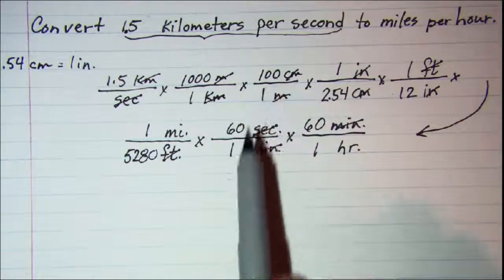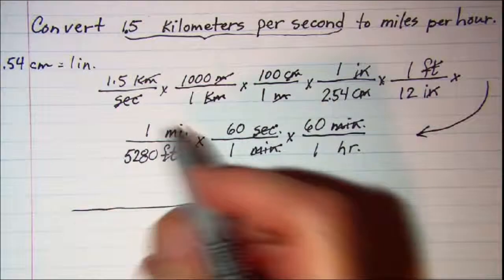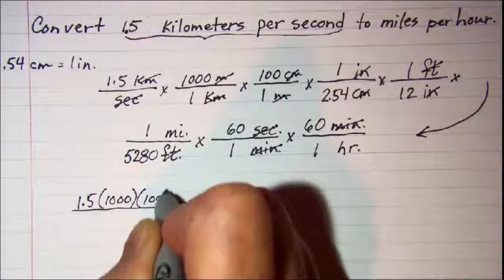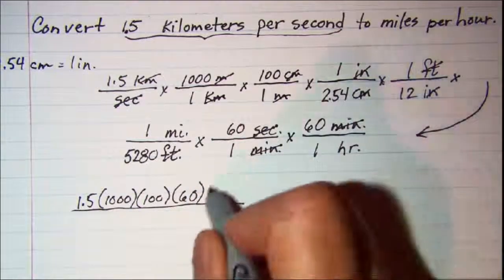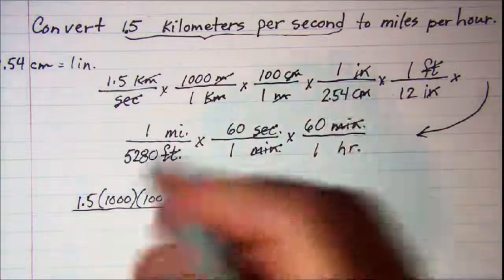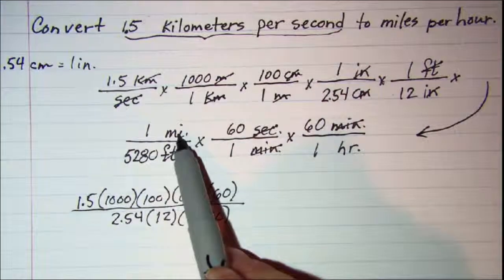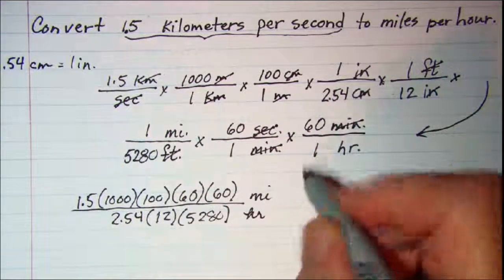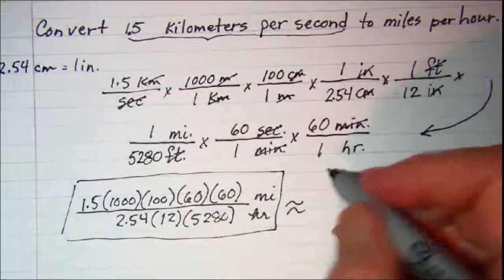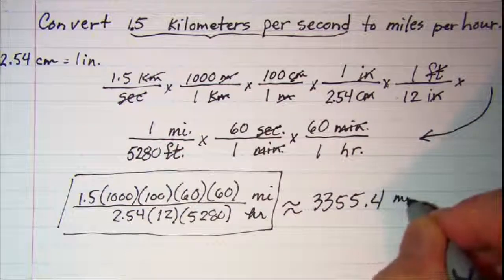It would be nicer if this was all on one line you could see it better but as long as you remember something in the top cancels something in the bottom that will help. So let's write our factors we have 1.5 times 1000 times 100 times 60 times 60 and in the denominator I have 2.54 times 12 times 5280 miles per hour so this is my answer in factored form equivalent to about 3355.4 miles per hour. Thank you.